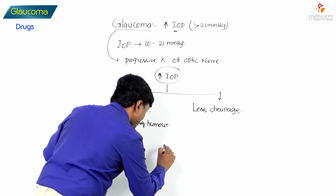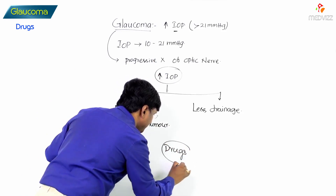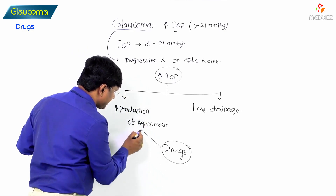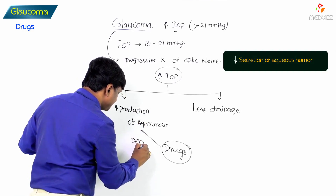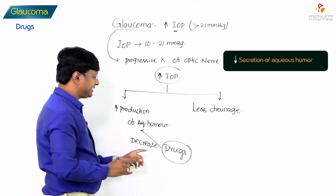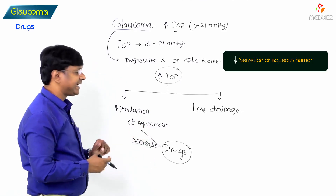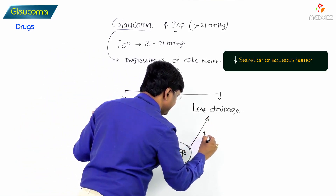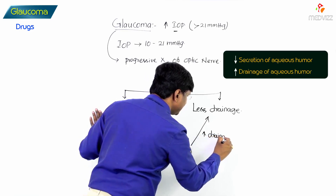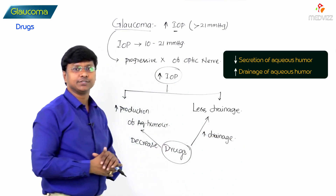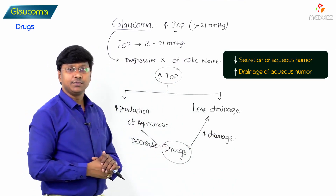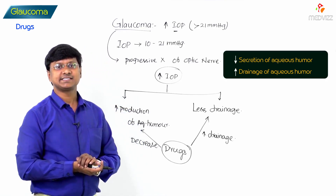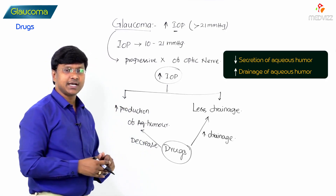So remember, raised intraocular pressure is either because of increased production of the aqueous humor or because of less drainage of the aqueous humor. Now the drugs which are used in the treatment of glaucoma either will decrease the secretion of the aqueous humor or they will increase the drainage of the aqueous humor.